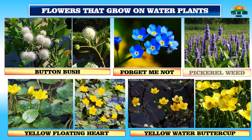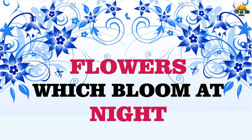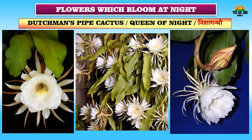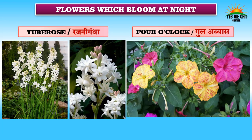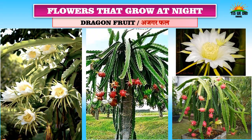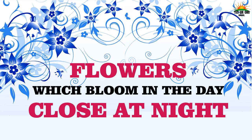Do you know there are some flowers which bloom only at night and close at day? These are Brahma Kamal — the state flower of Uttarakhand — so unique! Dutchman's pipe cactus or queen of night, called Nisha Gandhi in Hindi. More night-blooming flowers: tube rose, called Rajnigandha; four o'clock, called Gul Abbas; angel's trumpet; casa blanca lily; parijat; red flare water lily; night-blooming jasmine; moon flower; and the flowers of dragon fruit, called Ajgar Phal in Hindi — bloom at night, so unique!